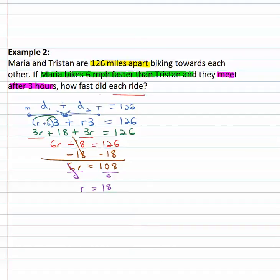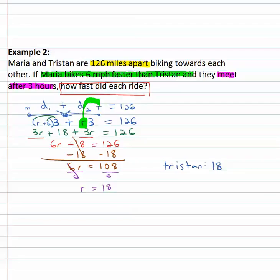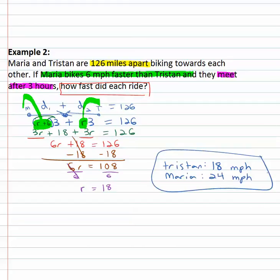We want to be careful — the question asks how fast did each person ride. R represents Tristan's rate, so Tristan's rate is eighteen miles per hour. Maria's rate was R plus six, so we add six to Tristan's rate: eighteen plus six is twenty-four miles per hour for Maria.